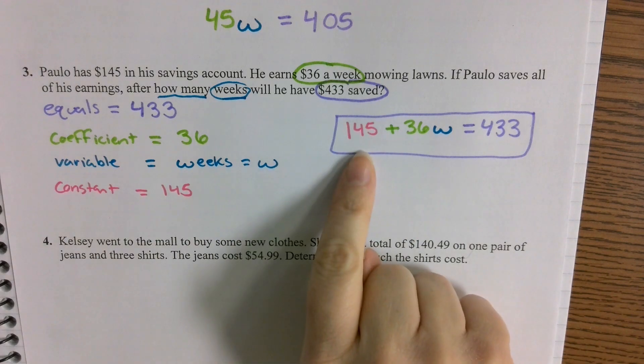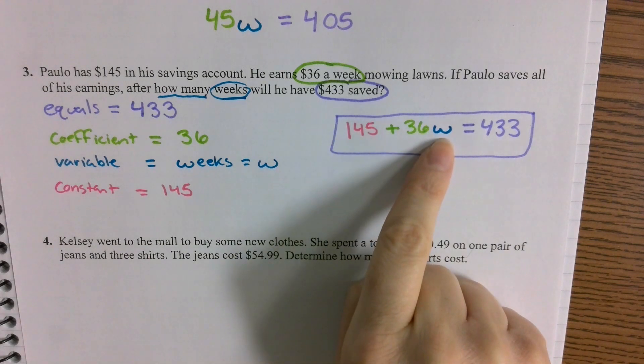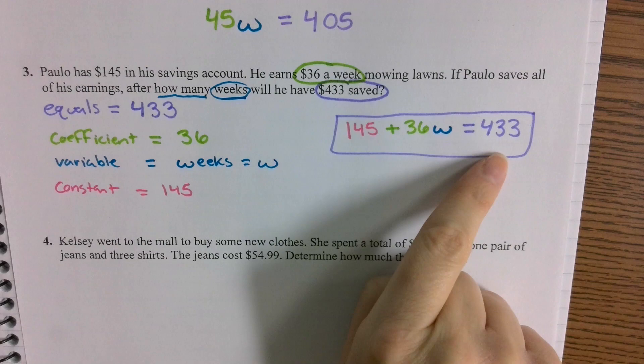Starts with $145. He's going to continue to save $36 every single week until he gets to his goal of $433.